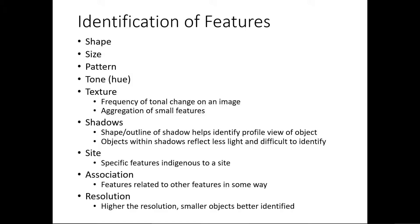The next parameter is site. There are specific features which are indigenous to a site — some features are observed at a particular location alone. For example, certain tree species grow only in certain geographical areas, like redwoods in California. Some features are specific or indigenous to a particular site, and knowing this helps you identify them.